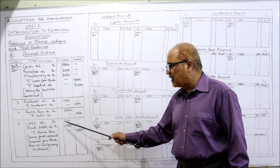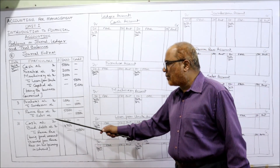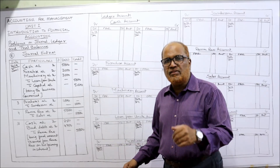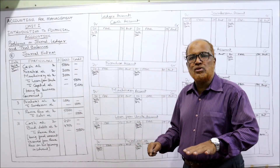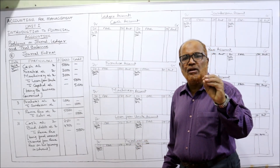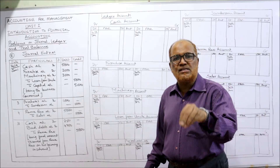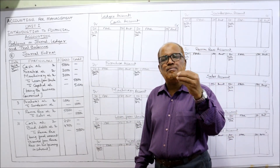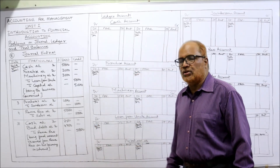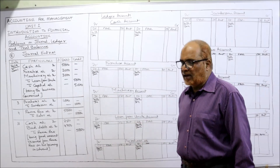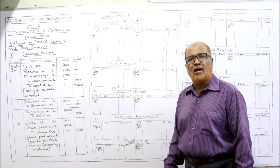The journal entry for the insolvency: cash account debit 250, bad debts account debit 4750, to Rama Rao 5000. When we sold the goods, Rama Rao's account was debited. Now when we receive cash, Rama Rao's account is credited and closed. Instead of 5000 we received only 250 rupees (5%), and the remaining 95% — 4750 — is recorded as bad debts. These are all the journal entries.